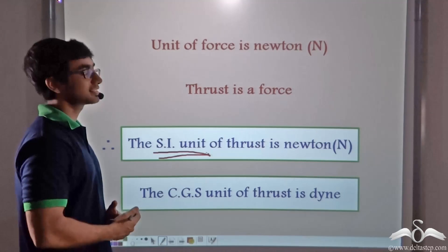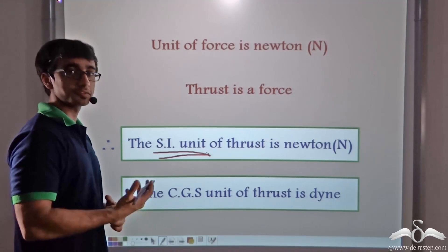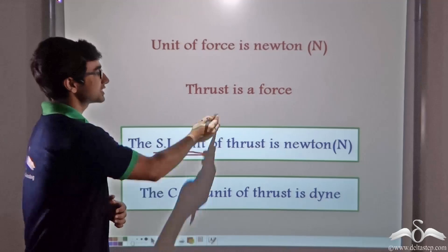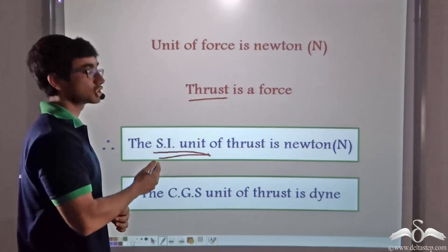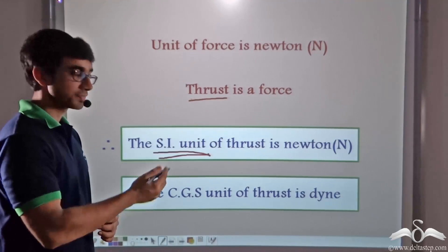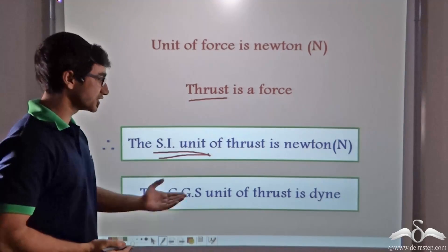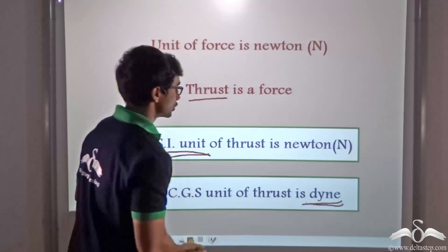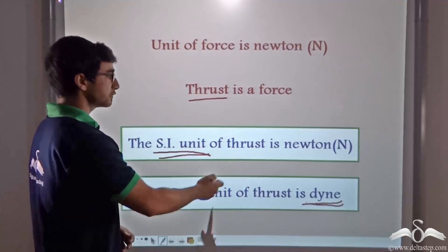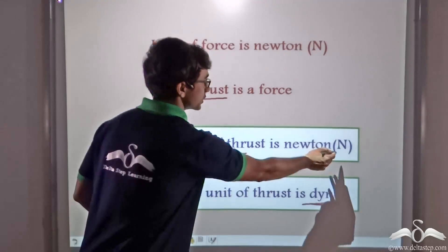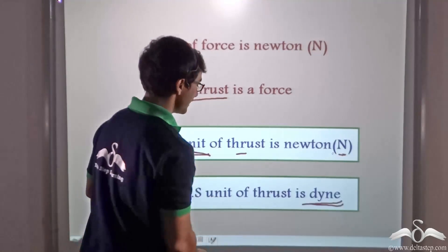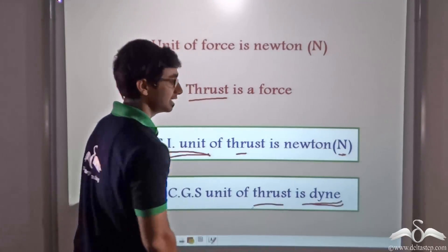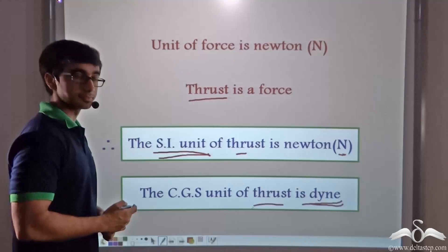Just as the CGS unit for force is dyne, since thrust is also a force, its CGS unit is also dyne. So the SI unit for thrust is Newton and the CGS unit for thrust is dyne.